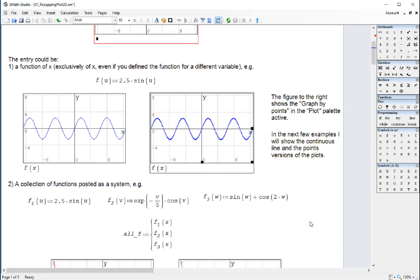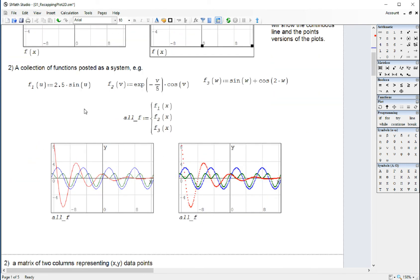We're going to now define three functions, f1, which is the same as before, f2 of v, and f3 of w. So we're changing the independent variable in each one of them.